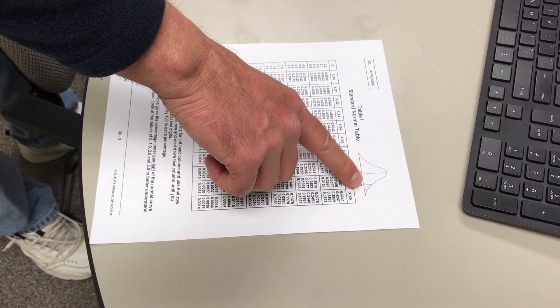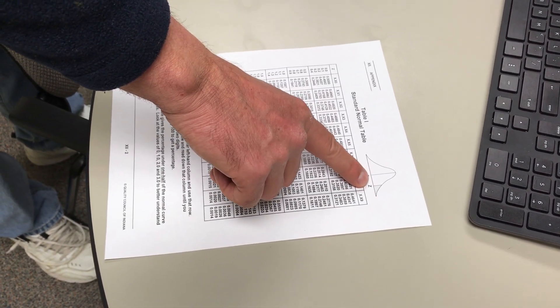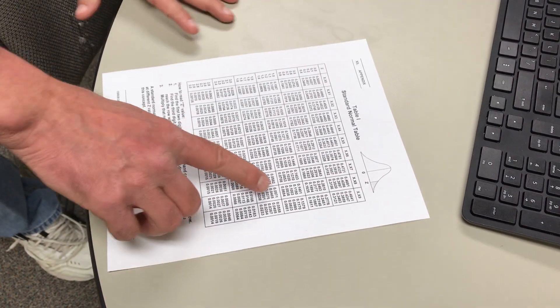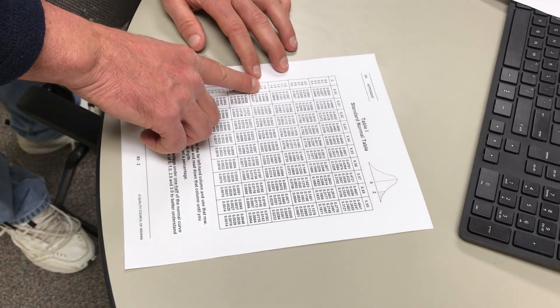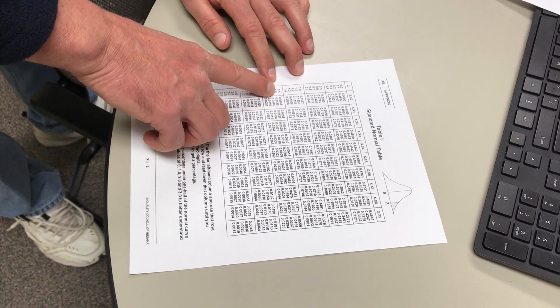Now you've got to be careful because this here actually goes from the point of interest greater than. I can get away with that because of the symmetry. So that's the way you use a standard normal table, or z-table sometimes it's called.